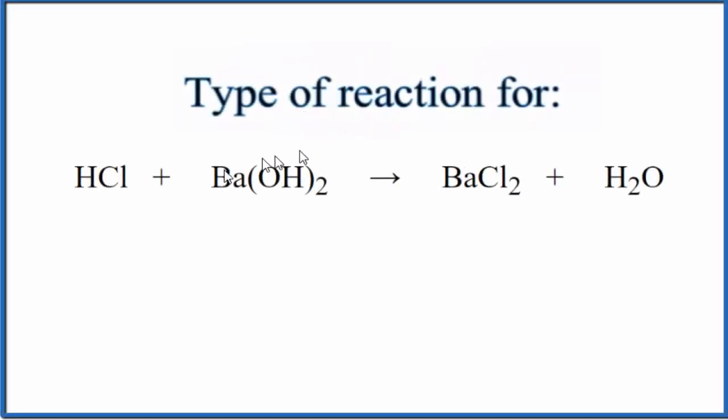In this video, we'll look at the type of reaction for HCl plus Ba(OH)2. This is hydrochloric acid, and this is barium hydroxide.